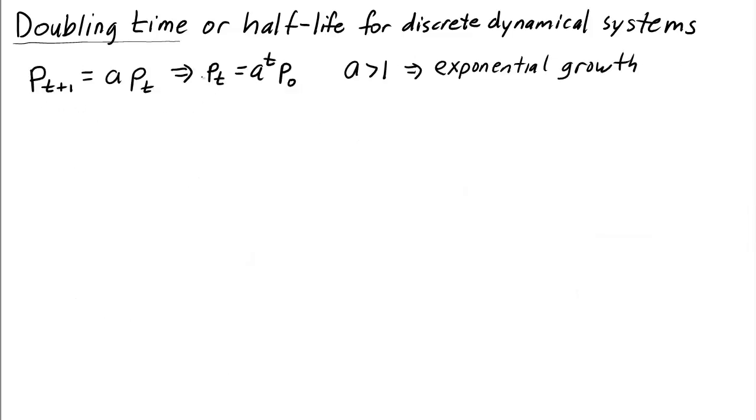Okay, here I wrote the dynamical system that leads to this exponential solution. And we're going to consider at first the case where the parameter a is greater than 1, so that we have exponential growth. What we want to do is characterize how the size of the parameter a influences the speed at which the solution grows. And we're going to do that using the doubling time.